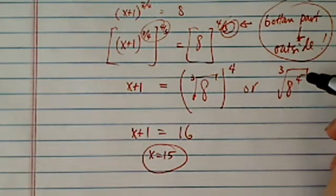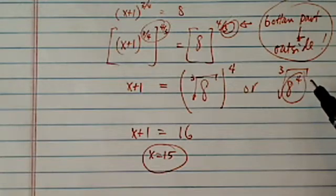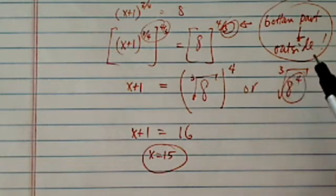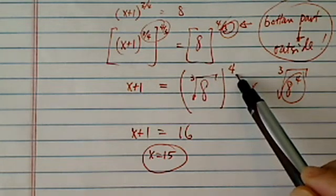Same thing over here. Now the only difference is if you were to do 8 to the 4th, it's a pretty big number. And then you're going to take cubic roots. It's much easier to simplify first, then take the exponential there.